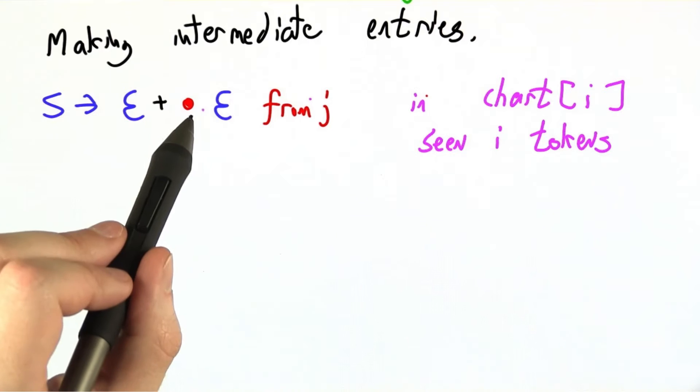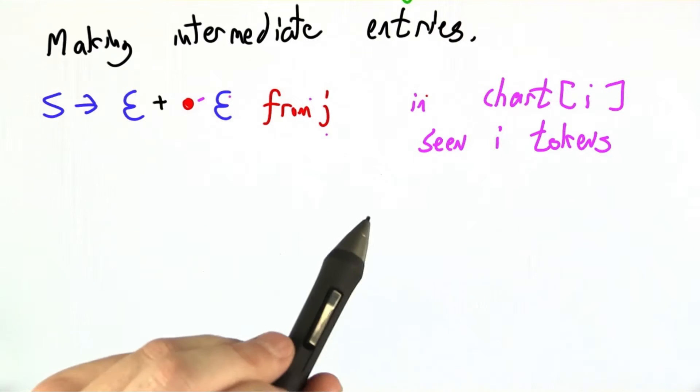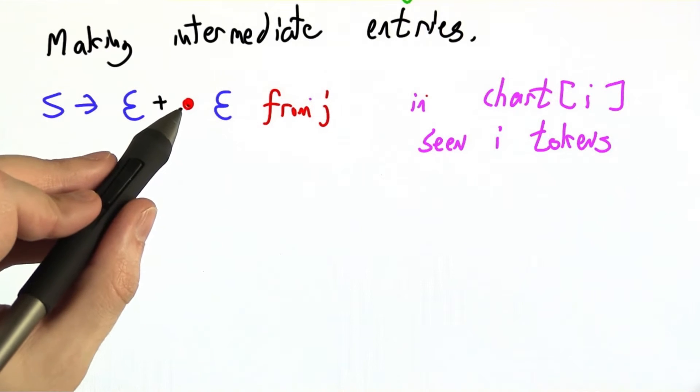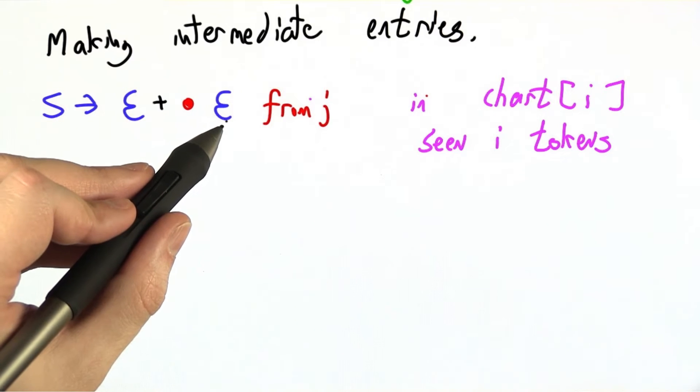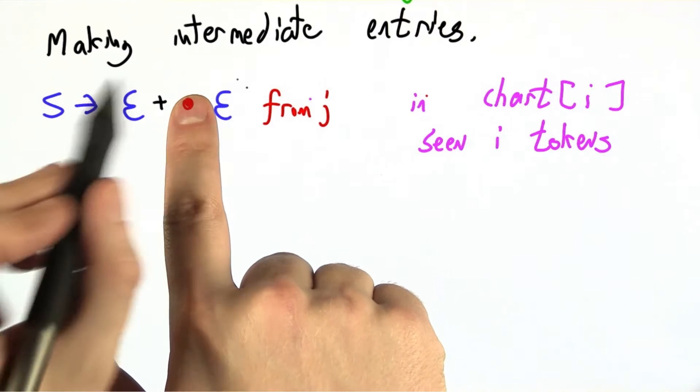S goes to E plus dot E coming from state J. This dot means we're expecting to see an E in the future. This is the future, this is the past.